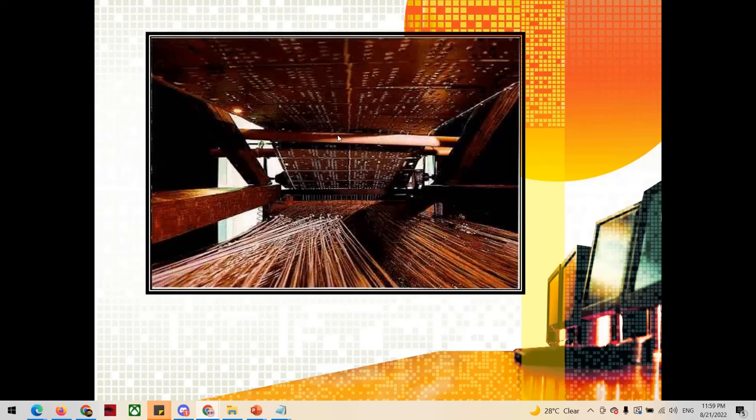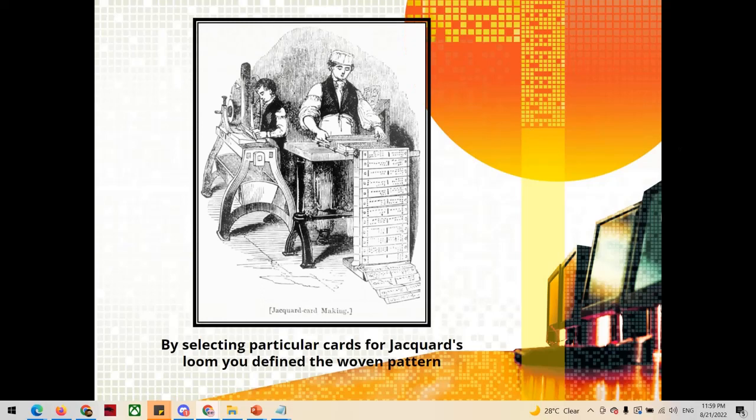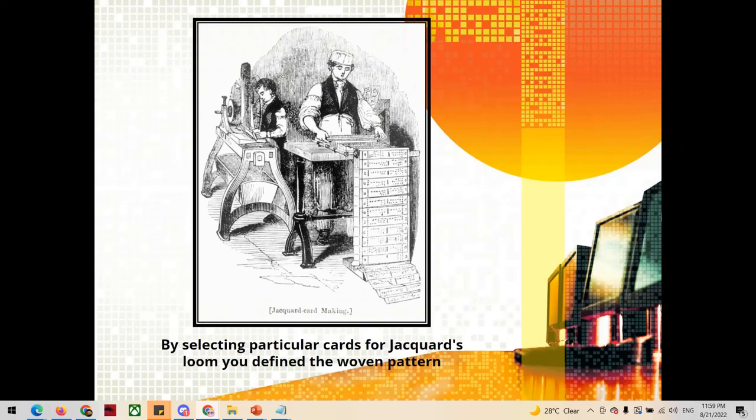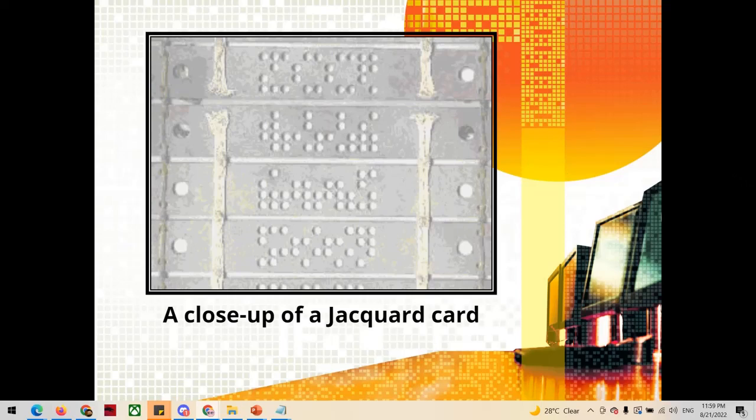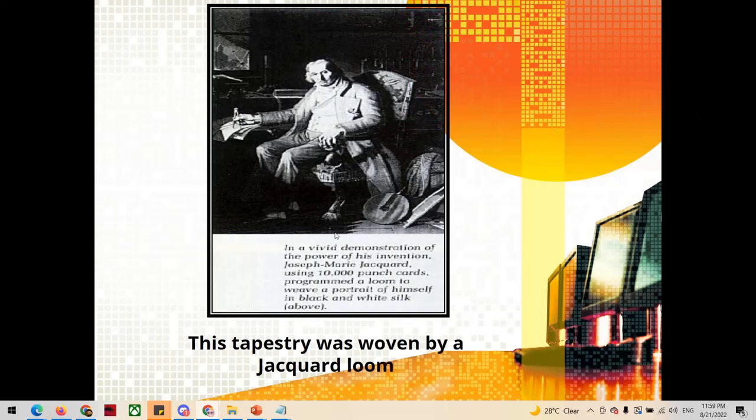It's like a dotted pattern with strings. This is the person working, and this is the close-up of the Jacquard card. And this is the tapestry woven by the Jacquard loom.